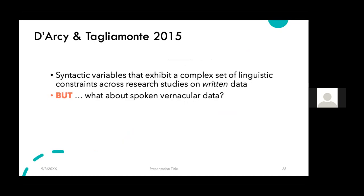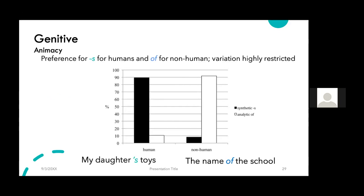We started noticing something in our results that no one had made a big deal about before. What looked like variation — indeed complex multi-level variation — actually wasn't nearly as variable as we thought, or that anyone had ever reported before. The choice between 's' and 'of' in English genitives is heavily partitioned when you split the data by animacy. Animates are overwhelmingly 's' — as in 'my daughter's toys' — whereas inanimates take 'of' — as in 'the name of the school.' Variation in vernacular speech is actually quite rare, as you can see in the purple box.